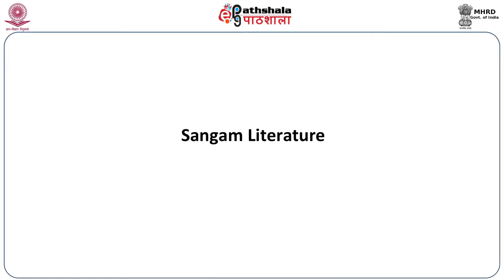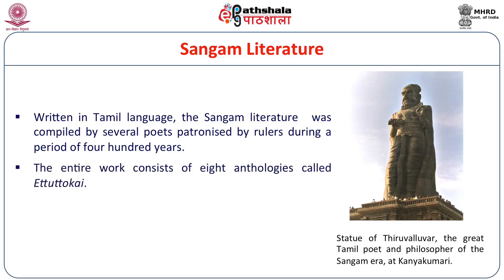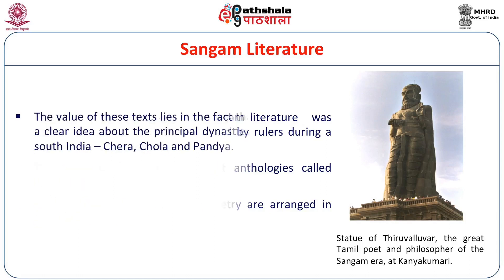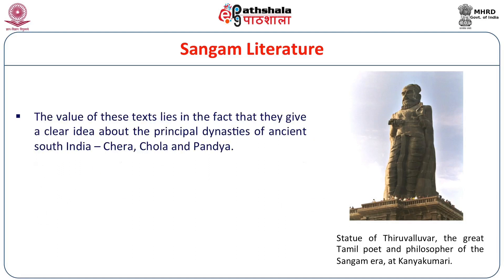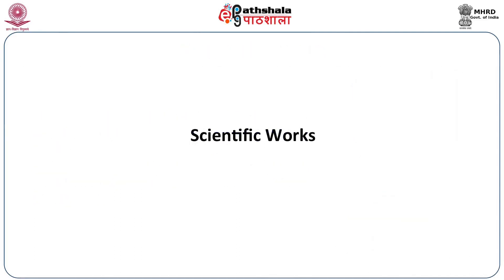Then we have Sangam literature, written in Tamil language. The Sangam literature was compiled by several poets patronized by rulers during a period of 400 years. The entire work consists of 188 anthologies called Ettuttokai, with nearly 30,000 lines of poetry arranged in groups of 100. These texts give a clear picture of the principal dynasties of ancient South India like the Cheras, Cholas and the Pandyas. Apart from Sangam literature, we also have the Tolkappiyam, which is a great grammatical work, and the Manimekalai, which is an epic — all very important for reconstructing society during the period they depict.